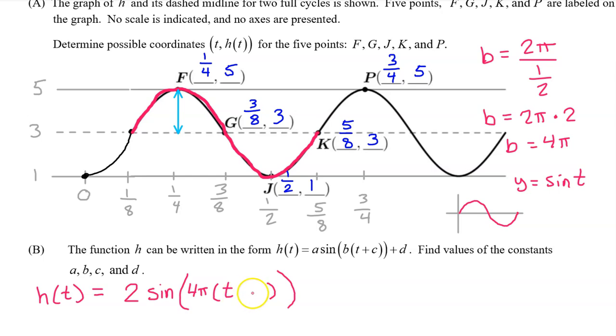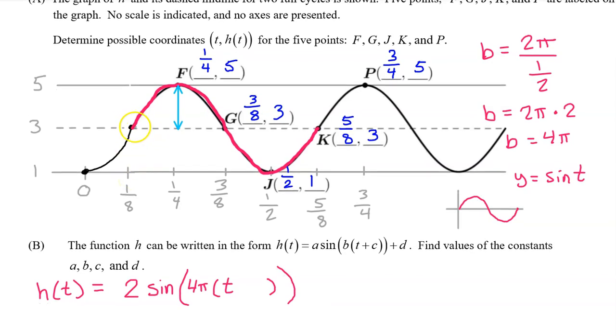Now it's time for the c value. The c value is the opposite of the phase shift. And the phase shift is the first input value. For this period, the first input value is one eighth, positive one eighth. Therefore the c value will be the opposite of that, which is negative one eighth. That just leaves the d value, which corresponds to the midline. Since the midline is at y equals three, the d value is positive three.